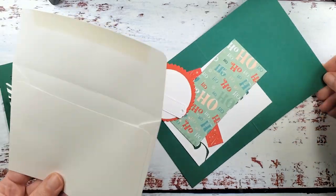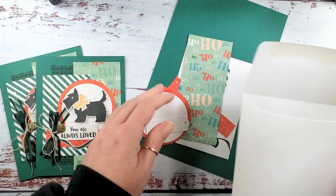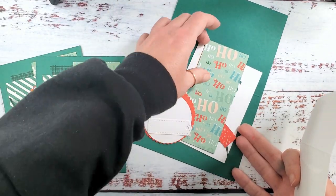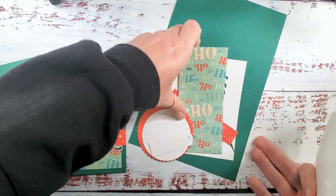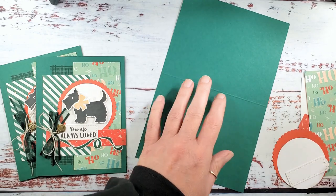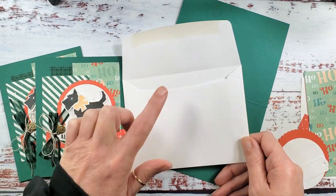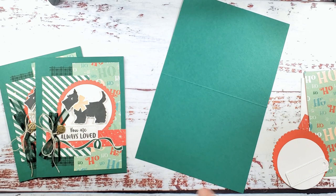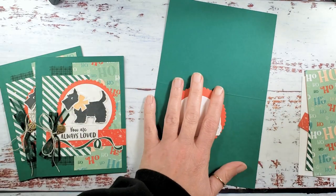Let's take a look at what we do for you in the packet. First of all your card bases are cut and scored for you. Card bases are eight and a half by five and a half, scored at four and a quarter. We put it in the mailing envelope so you'll have your envelope ready to go along with any basic die cut pieces.